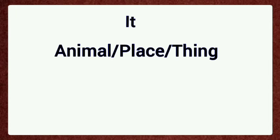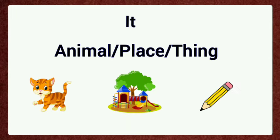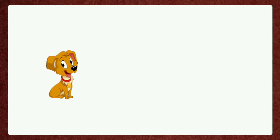Next one, It. It will be used to indicate an animal, a place, or a thing. For example, Dog. Dog is an animal. So use It. Say, It is a dog.